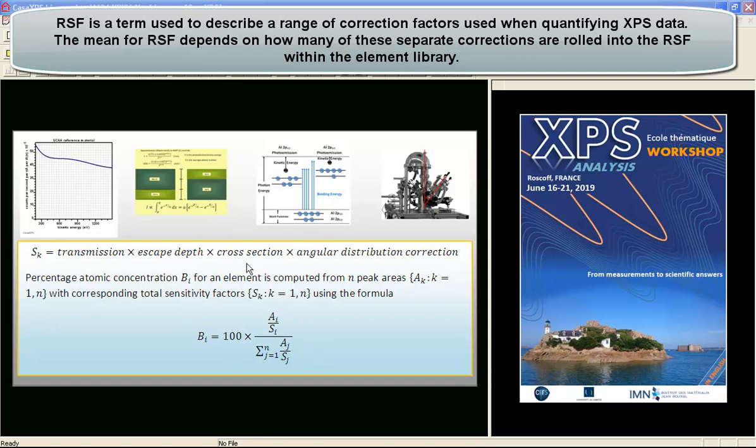There is an alternative to using Schofield cross sections, which is to provide sensitivity factors that are empirically determined from standard materials. If you know the transmission function and the angle for the X-ray source to the analyzer for the instrument that measured the standard materials, you can remove these from the sensitivity factors. In general, empirical sensitivity factors will include the escape depth correction and the photoionization cross section. This means we have the potential for tabulating relative sensitivity factors.